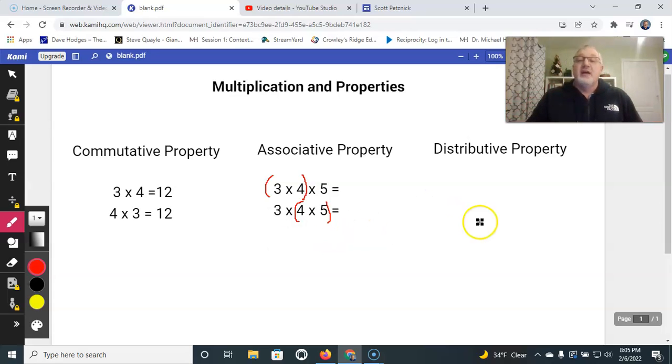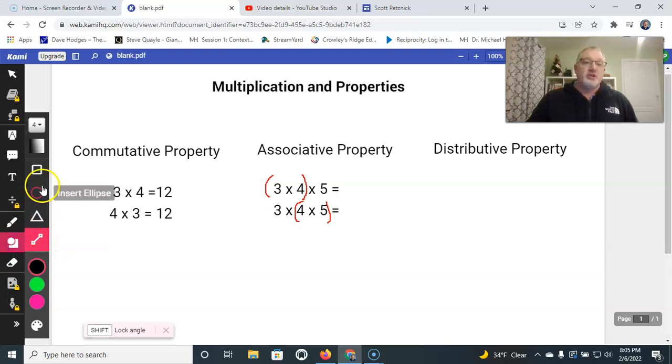So the associative property has to deal with parentheses and deciding which pair of numbers I am going to multiply first, which digits I'm going to use. Now the distributive property, we've talked about quite a bit, where we break a number down, multiply the parts, and then add it back together.